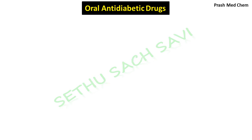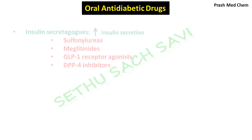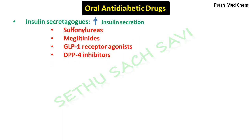Now an overview of all three categories. The first category is insulin secretagogues — as the name tells, drugs in this category increase the secretion of insulin hormone. The classes of drugs under this category include sulfonylureas, meglitinides, GLP-1 receptor agonists, and DPP-4 inhibitors.